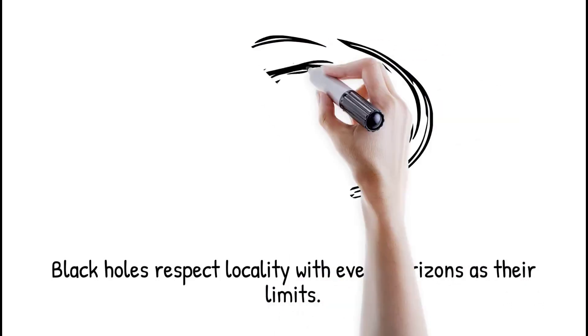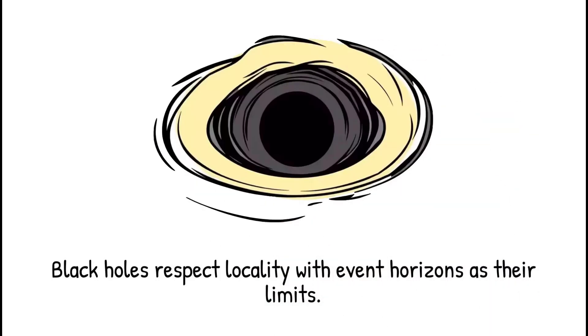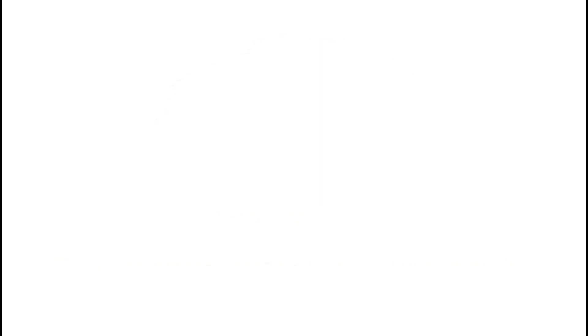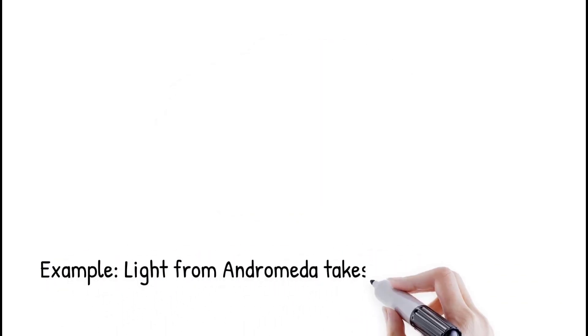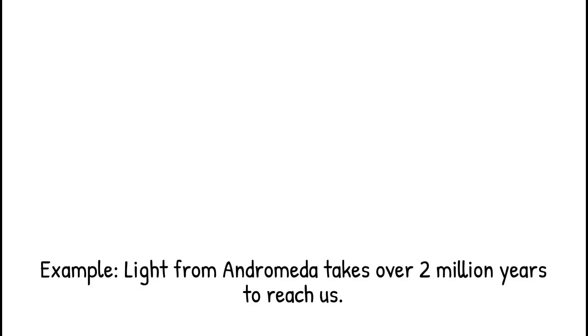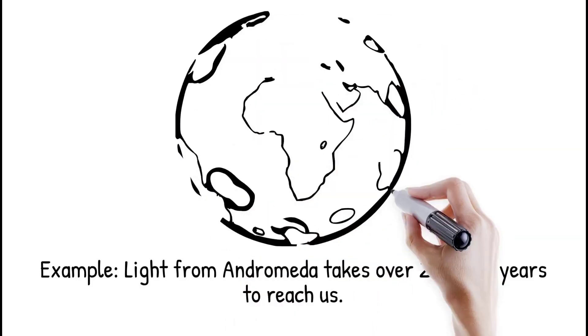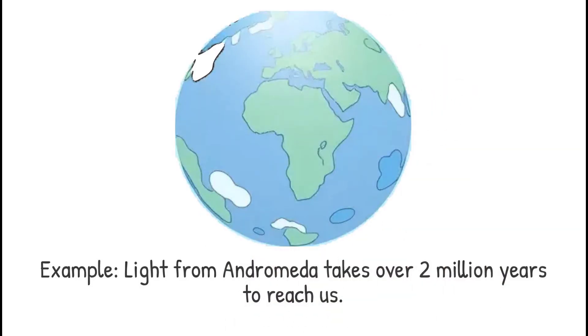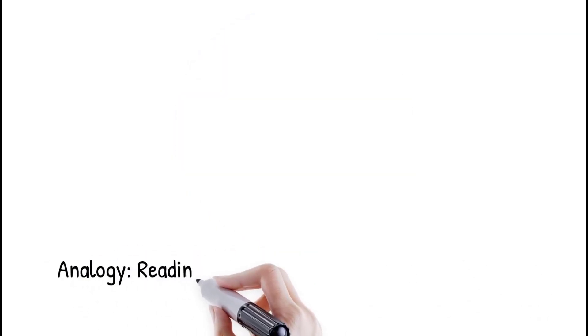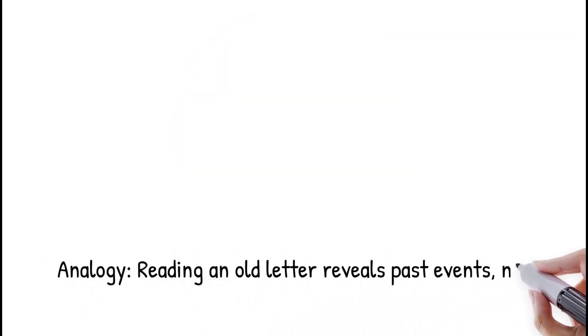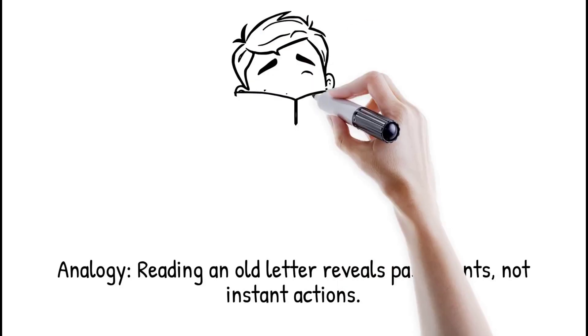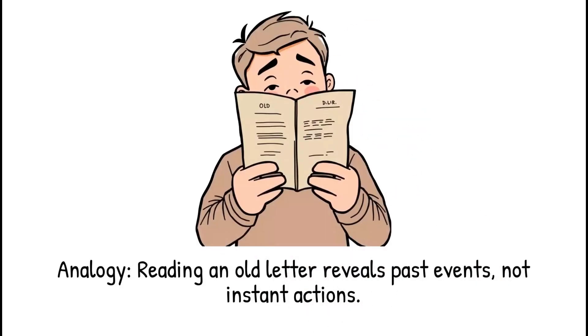Astronomers rely on this framework to map cosmic events. The universe, at large, seems safely local. Light from the Andromeda galaxy takes over 2 million years to reach us, so we see it as it was in the past. It is like reading an old letter. You only learn what happened long ago, never instantly.